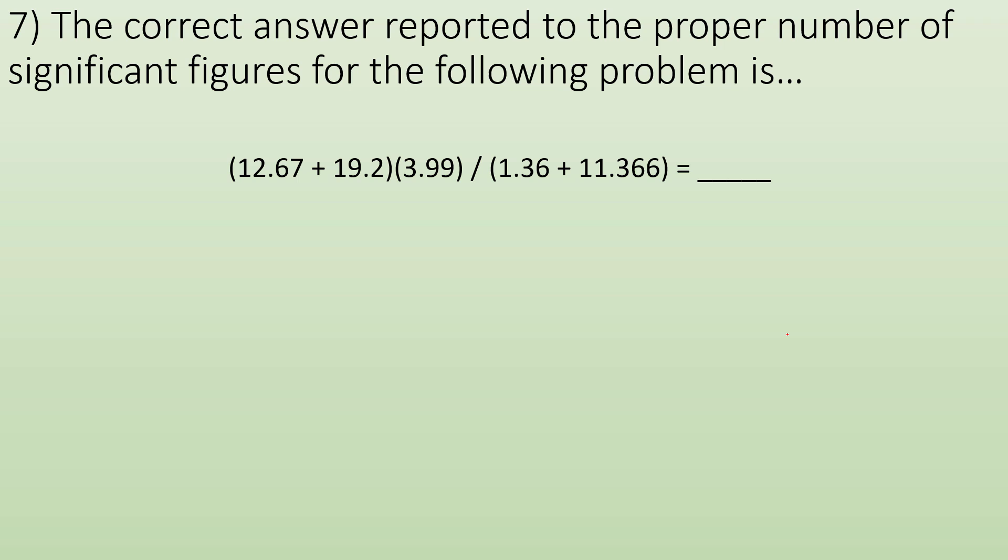Now, what if the problem is a little more complicated? Like here we got addition and subtraction. It's in parentheses. You're going to save all your rounding for the very end. So if I take a look in these set of parentheses, I'm adding them together. So when I add them together, I end up with 31.87. But what I'm supposed to do when I add and subtract is to round to the least precise number.